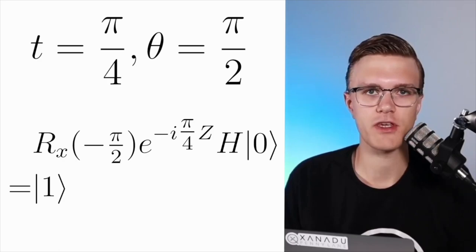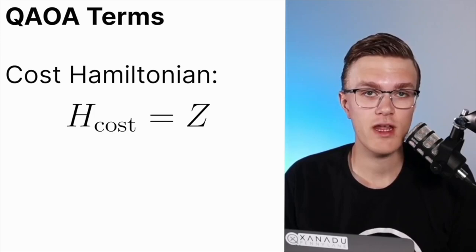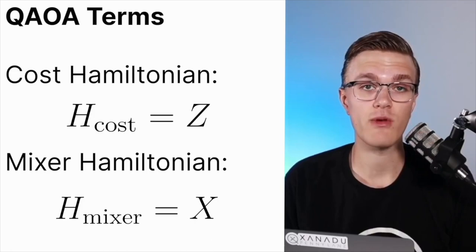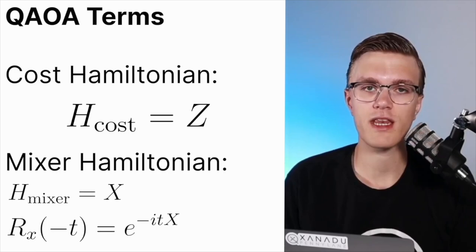The Hamiltonian that we use in our example is usually called the cost Hamiltonian — it's the thing that we want to find the ground state of. The Rx gate with a negative rotation angle plays the role of the mixer. The mixer is actually typically defined by a mixer Hamiltonian that we then time evolve under. You can see that the Rx gate is equivalent to time evolving under a Hamiltonian that is just the X gate under some specific time, where the time plays the role of the angle.